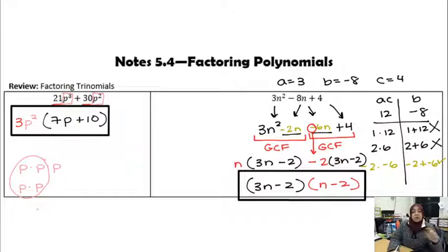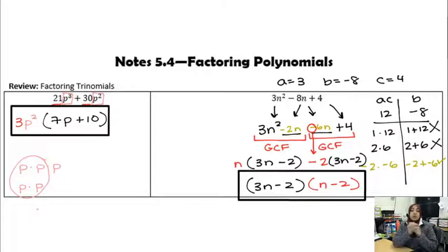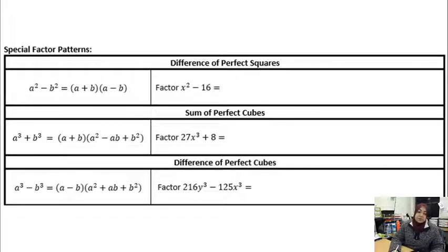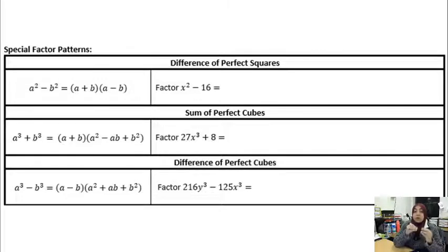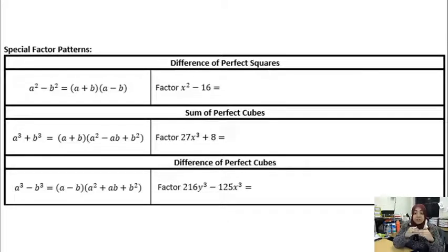I want to remind you of something we learned when multiplying: special factor patterns. These can feel overwhelming, but they're just formulas. When you're multiplying, you can always do it the long way; it doesn't really hurt. But when factoring, it's so important to know these patterns because the values you're factoring have two terms, and look at what happens when you factor them out — you really don't want to do that the long way. The first pattern is the difference of perfect squares.